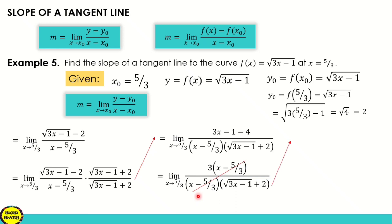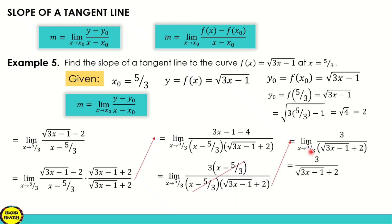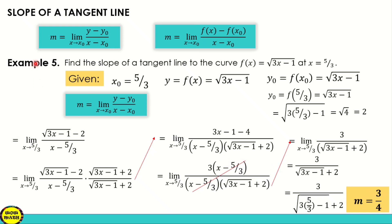After cancellation, we have the limit of 3 all over (√(3x minus 1) plus 2) as x approaches 5/3. Substitute x = 5/3: the denominator becomes √(3 · 5/3 minus 1) plus 2 = √4 plus 2 = 2 plus 2 = 4. Therefore the final answer is 3/4. The slope of the tangent line is 3/4.